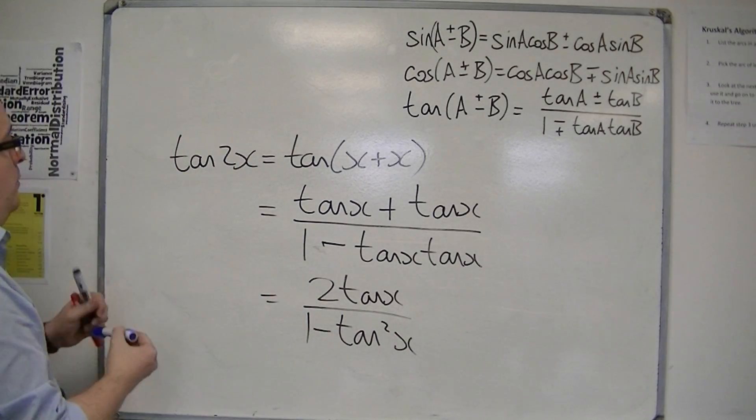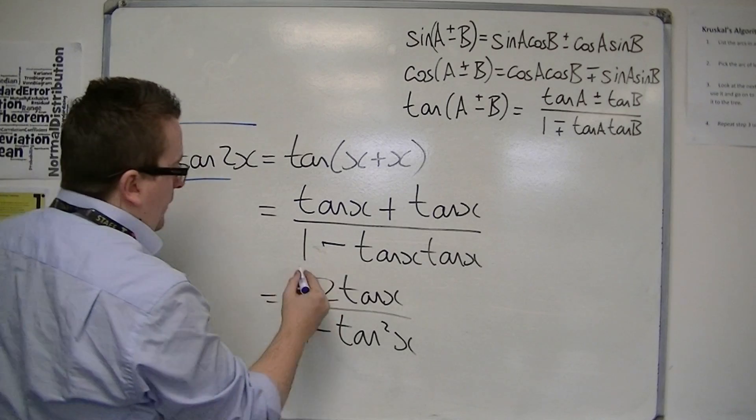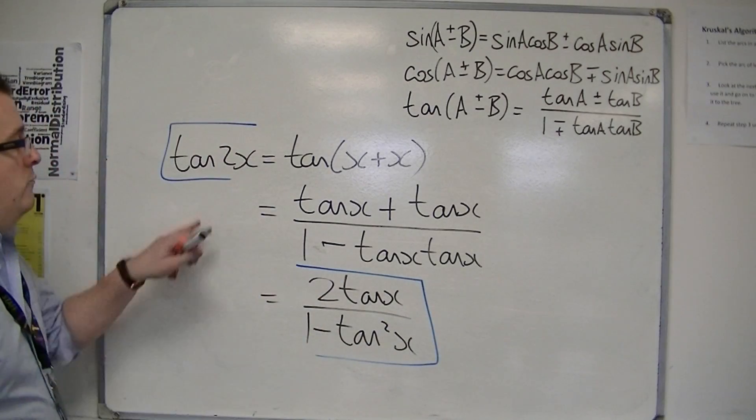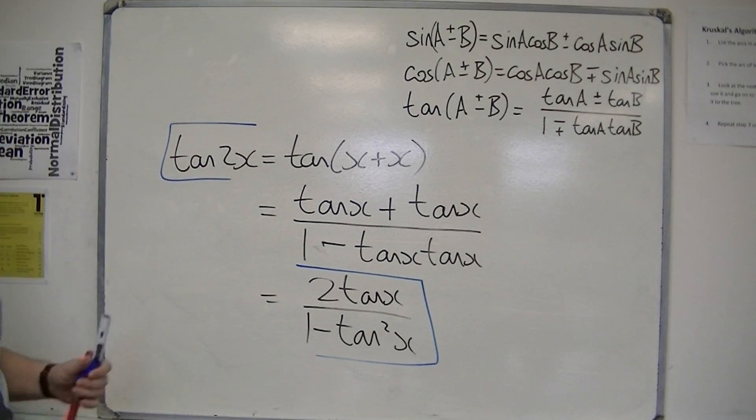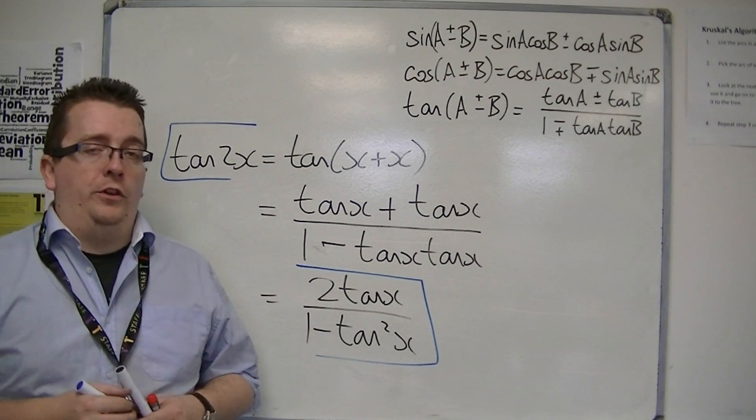OK, so that is writing tan 2x in terms of tan x, much in a similar way as we've worked with sin 2x and cos 2x beforehand.